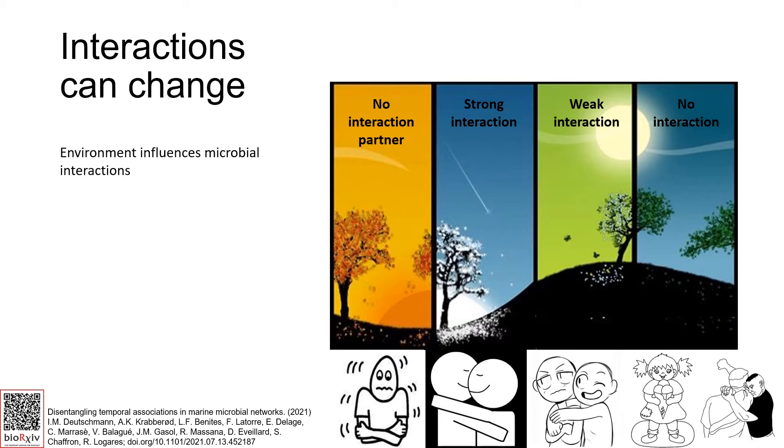The idea here is that interactions can change and environmental conditions can influence microbial interactions. This challenges our investigations. We have a static network to represent a dynamic system. However, the sampling limitations did not allow us to construct a network for each month.